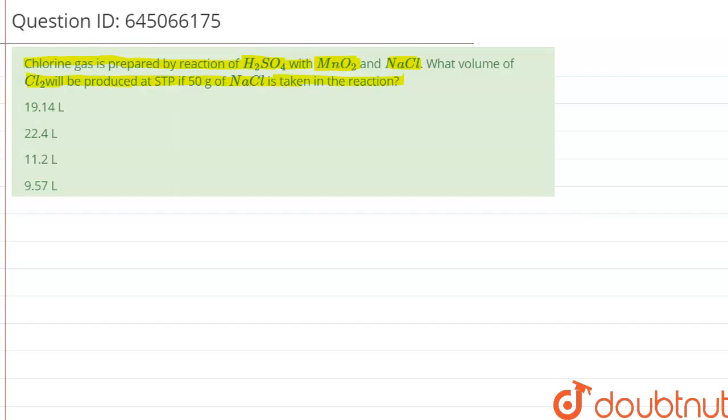First of all, we should write the reaction which is going in this equation. That is NaCl reacts with H2SO4 plus MnO2 to form NaHSO4 plus MnSO4 plus Cl2 plus H2O. So if we balance this, we will get a 2 over here, a 3 over here, 2 over here, and a 2 over water molecule.